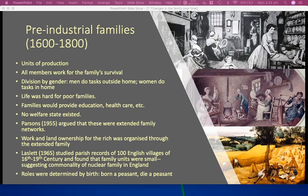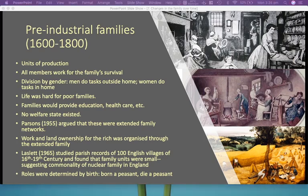Peter Laslett, from 1965, however studied parish records of 100 English villages from the 16th to the 19th century and found that family units were small — parents and children living together without other generations. This would suggest that in England, at least, the nuclear family has always been common. During this period of history, roles were determined by birth, so a child born a peasant was likely to die a peasant. Social mobility was virtually non-existent.